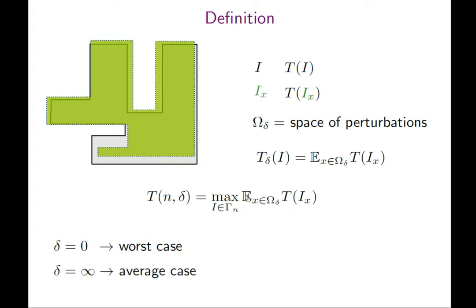Note if you would not perturb at all and delta would be zero, then this would just be the worst case. You just take the average over one instance and that's the runtime of that instance, and then you take the maximum over all instances, which is just the definition of worst case running time.